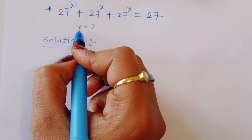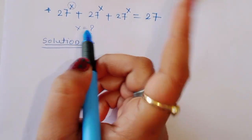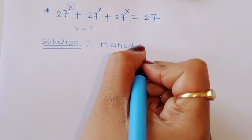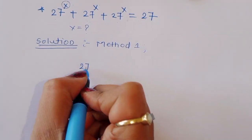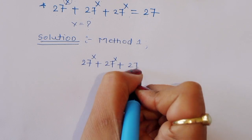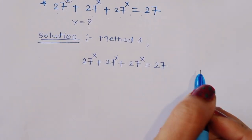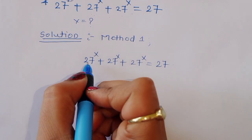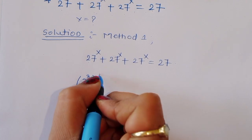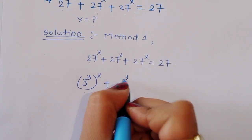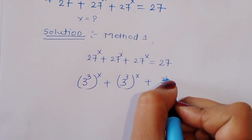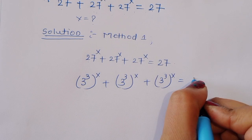We can find out the value of x by using two methods. Let's see the first method. Method 1: 27 raised to x plus 27 raised to x plus 27 raised to x is equal to 27. This is given. We can write 27 as 3 raised to 3, so this becomes 3 power 3x plus 3 power 3x plus 3 power 3x is equal to 27.